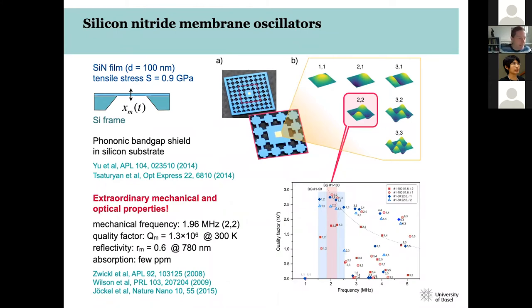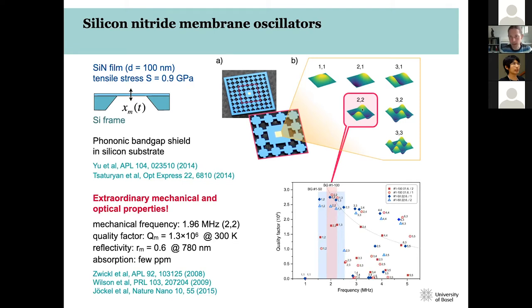The mechanical device we use is a silicon nitride membrane oscillator. The membrane is an ultra-thin silicon nitride film, only 100 nanometers thick, freestanding and attached to a silicon frame under tensile stress — essentially a square drum oscillator that can vibrate out of plane. It exhibits a fundamental mode and higher modes. Surrounding this membrane is a phononic band-gap shield — a periodic pattern with a band gap right at the mechanical frequency of the membrane — suppressing radiation loss and isolating the membrane from environmental vibrations.